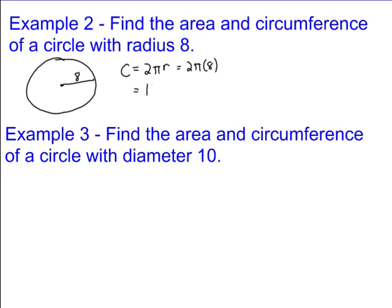Which gives you 2 times 8 is 16 pi. I don't substitute anything in for pi because I want my answers to be exact, so I leave it as 16 pi.